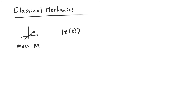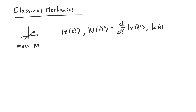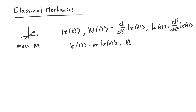For example, the velocity is just the first time derivative of the position, and the acceleration will be the second time derivative of the position. The momentum will be the velocity scaled by the mass. The kinetic energy will be one half m times the inner product of v with itself. So if we know m and the position for all times, then we know everything we would ever want to know about this system.